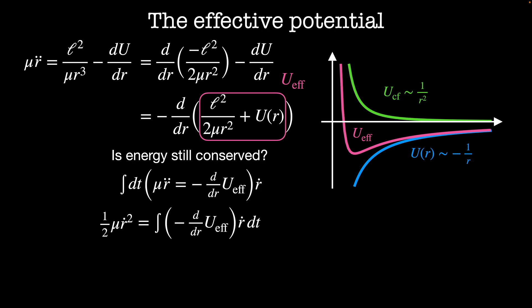On the left hand side I have 1/2 μ r dot squared, which looks like our kinetic energy, and on the right side I have the integral of minus d by dr of U_effective times r dot dt. We can use the chain rule to write d by dr as d by dt times 1 over dr by dt.